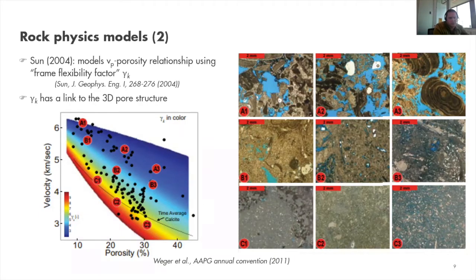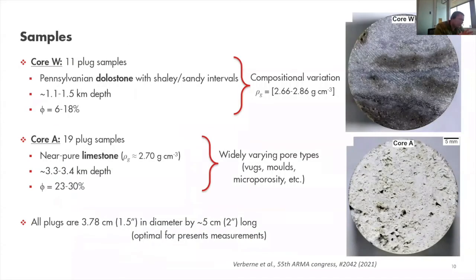These rock physics models enable us to capture the typical scatter of velocity-porosity data from the lab and thereby improve the core-to-log calibration. Now, turning to the work we actually did: we used two sample suites. Core W consists of 11 plug samples of Pennsylvanian dolomite stone with shaley and sandy intervals, extracted from 1.1 to 1.5 kilometers depth, characterized by compositional variation.